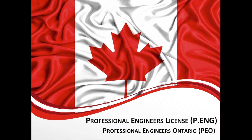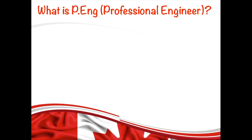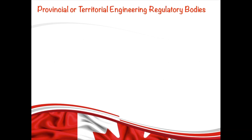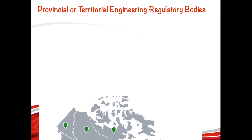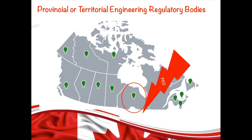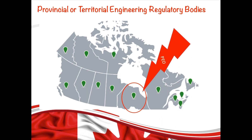Let's first understand what a professional engineer means. A professional engineer is an individual who has been issued a license by a provincial or territorial engineering regulatory body after demonstrating that they have the requisite education, skills, knowledge, and work experience. Each province or territory of Canada has its own engineering regulatory body, but in this video I will be talking about Ontario's, which is called PEO — Professional Engineers Ontario.